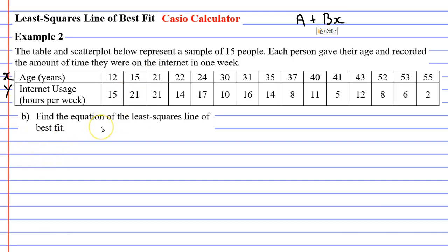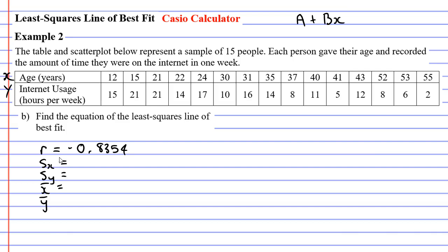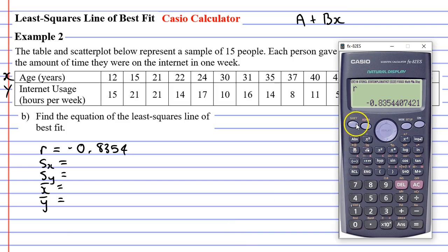We'll write down the values we need: r, Sx, Sy, x-bar, and y-bar. We already found r, the correlation coefficient, which was negative 0.8354. We've got four more values to find, which are actually not too difficult because you can get them directly from the calculator.